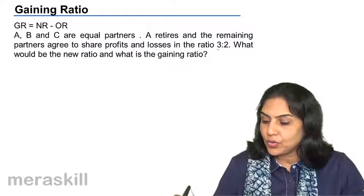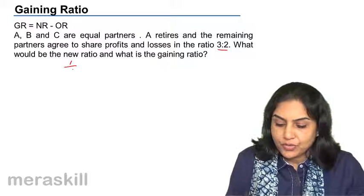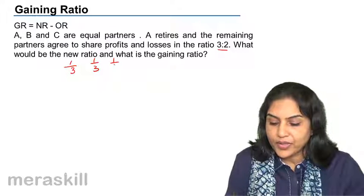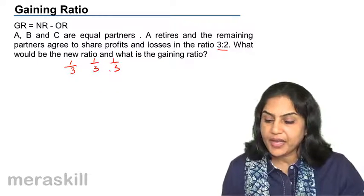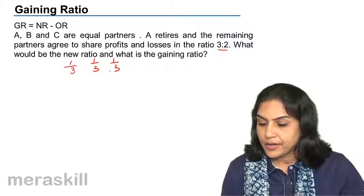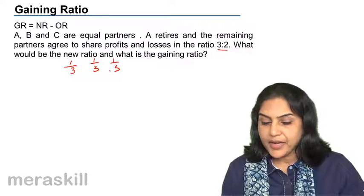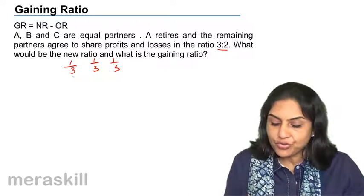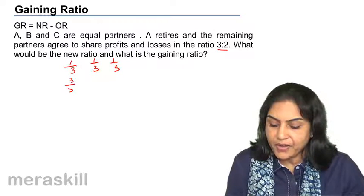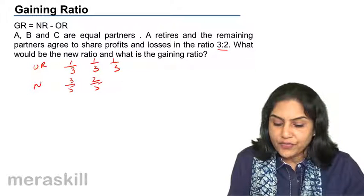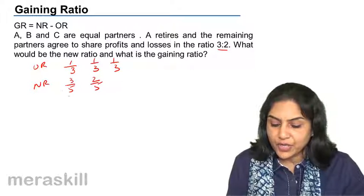The old ratio was equal — one third, one third, one third for A, B and C. A retires. The remaining partners agree to share in the ratio 3 is to 2, so the new ratio is 3 by 5 and 2 by 5. This was the old ratio and this is the new ratio.